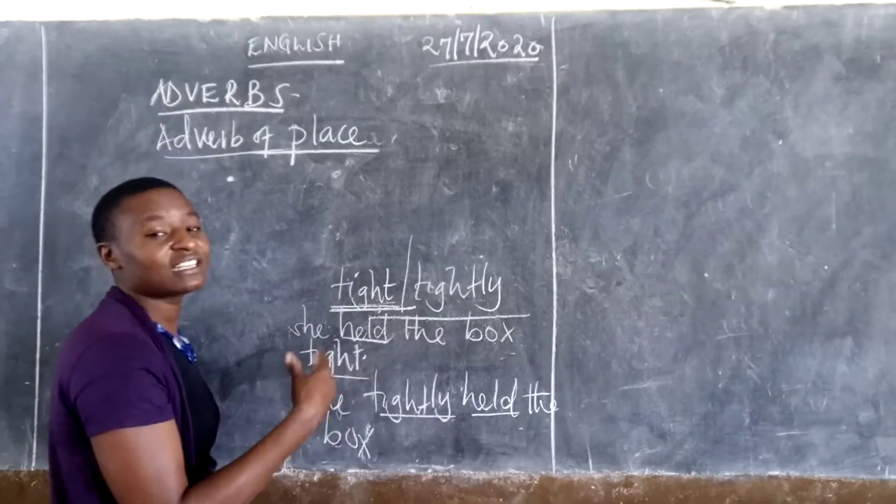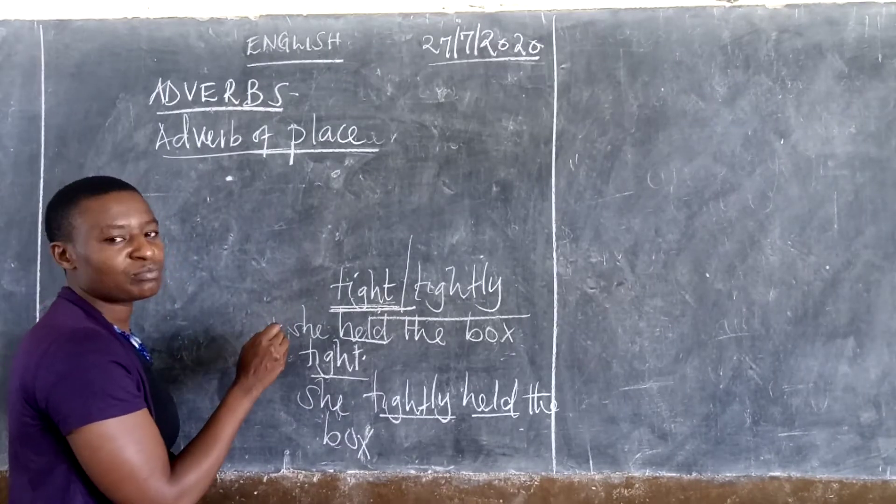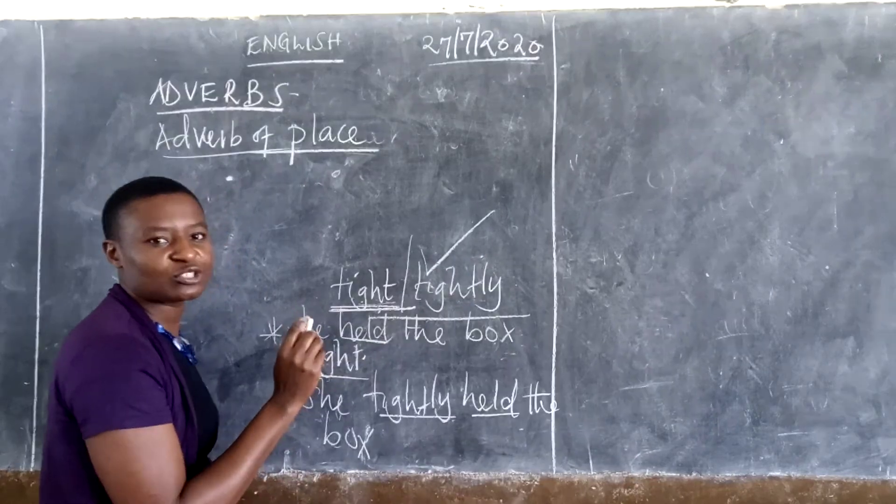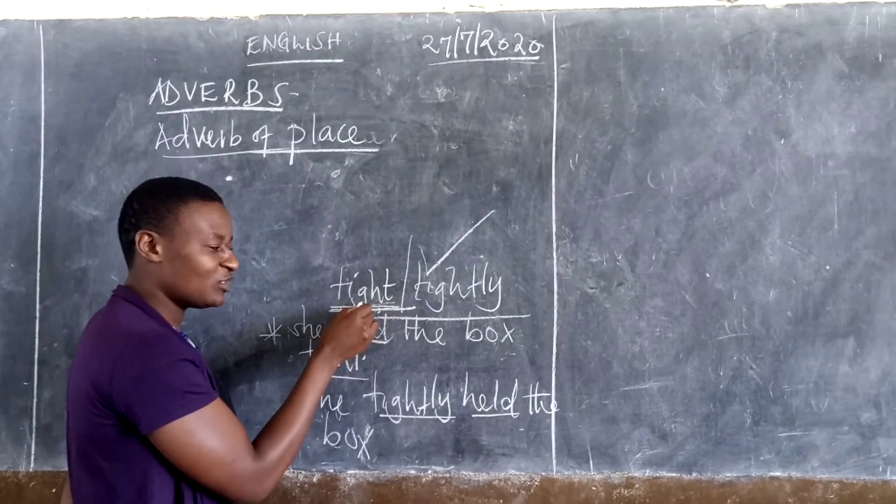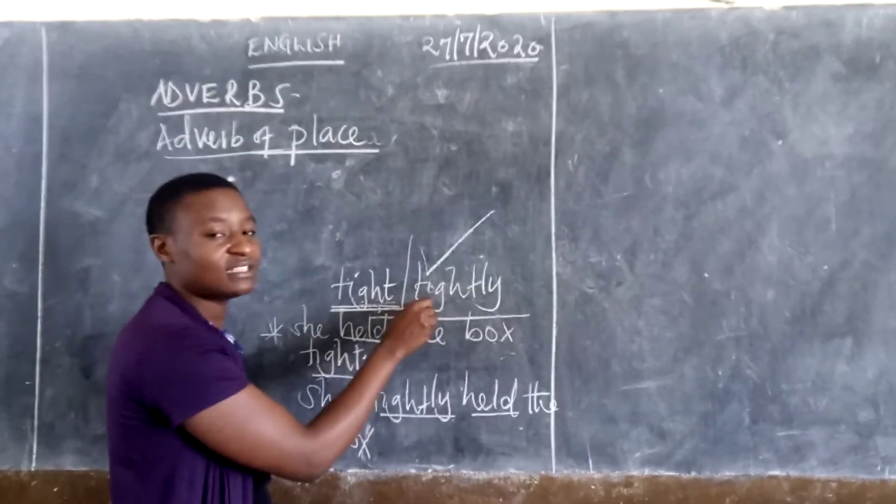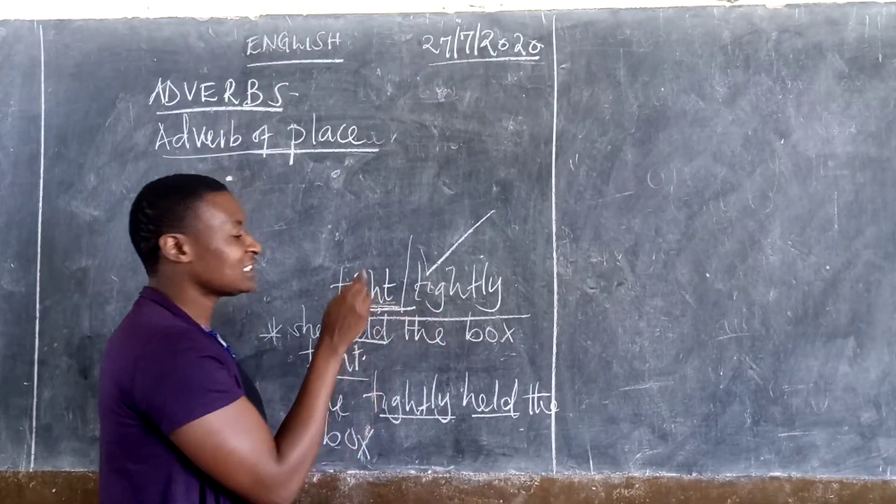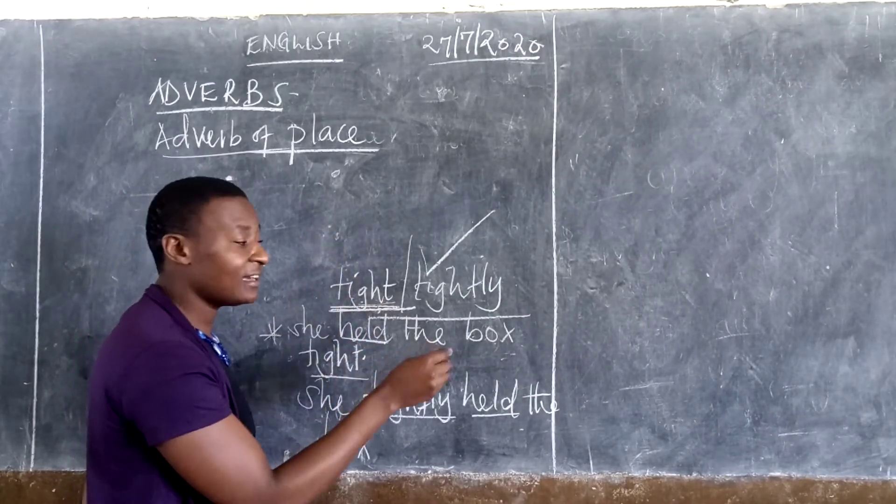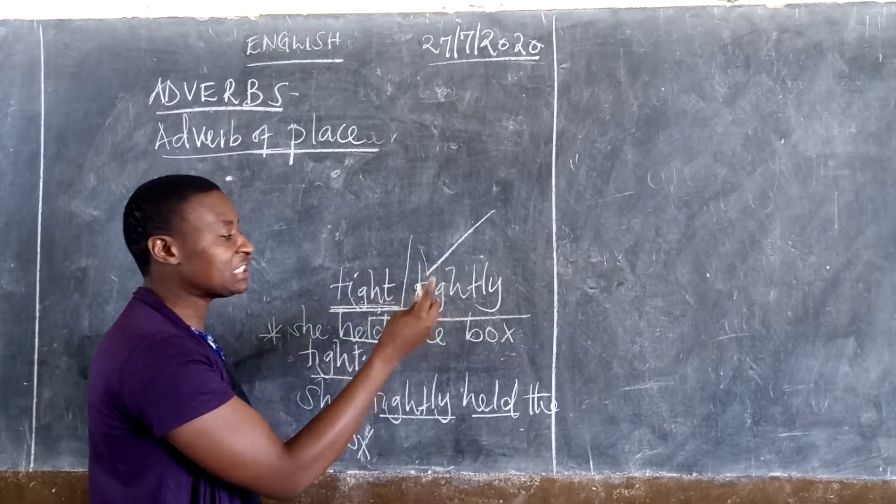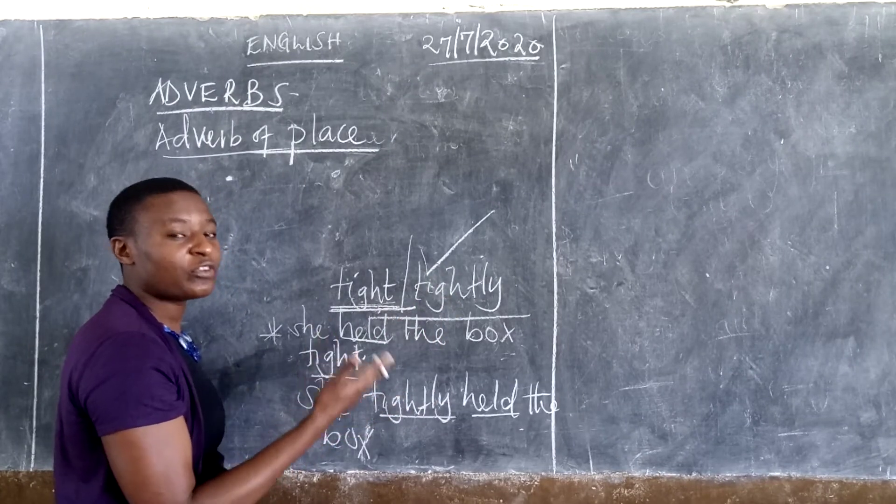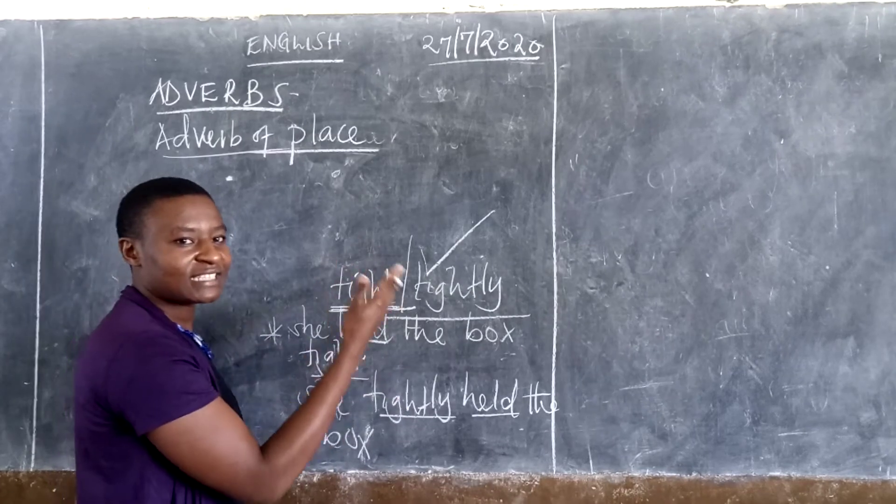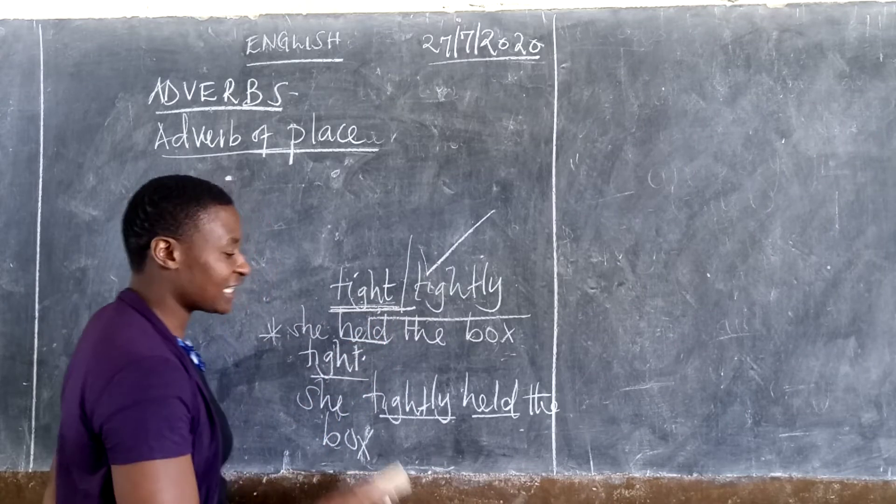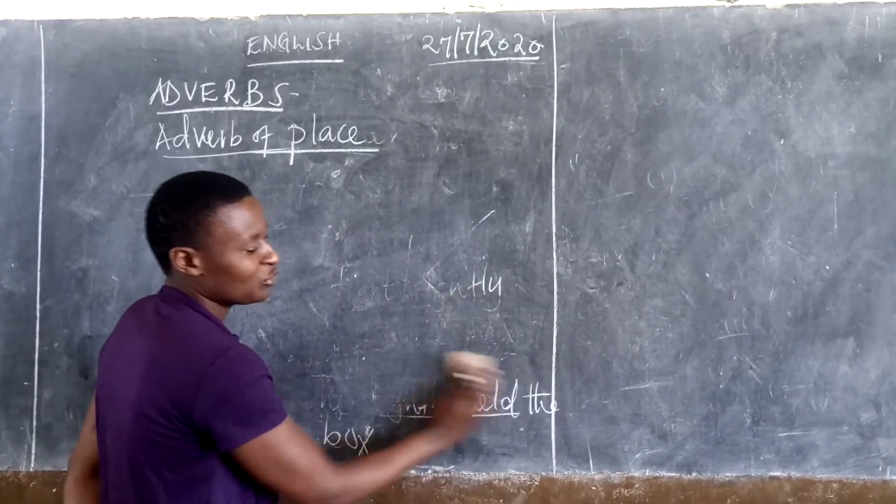Although most of the sentences in class 6 will always come in this manner. Both are adverbs fine, but the only thing that we need to know is, at what time do I need to use tight? At what time do I need to use tightly? She held her mother's hand tight. She tightly held her mother's hand. Let me hope I'm clear on that. But most of you try. I congratulate you on that.